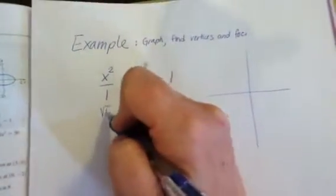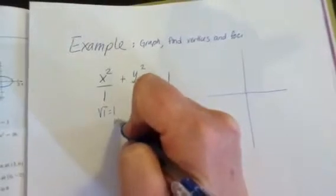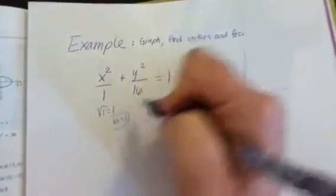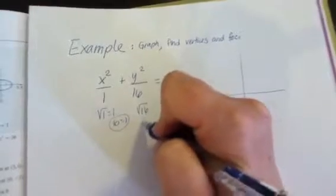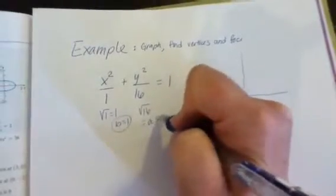So the square root of 1 is 1, that's b. The square root of 16 is 4, so that's a.